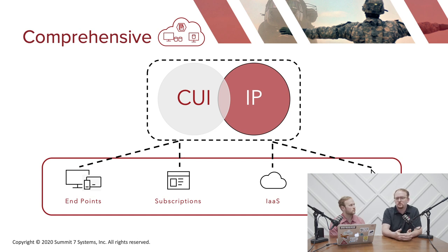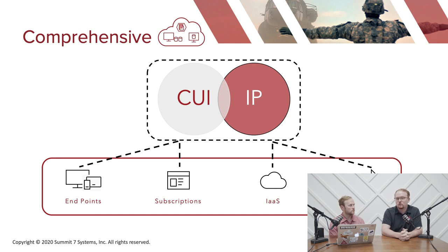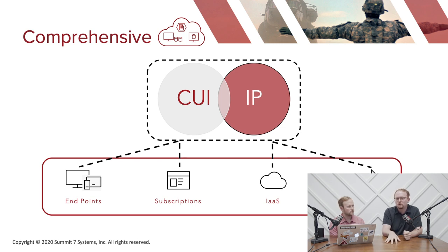For cloud subscriptions and IaaS, it's important to understand that some organizations back up too much data, which increases both cost and liability. Archive mailboxes that are five or ten years old need scrutiny. You also need to watch for shadow IT — people backing up data to Dropbox or Google Drive when those aren't corporate applications. Locking down third-party file-sharing services to prevent data being backed up outside approved channels is critical.